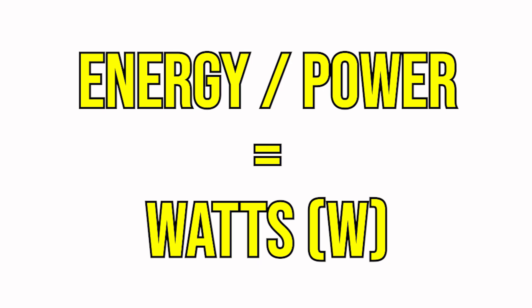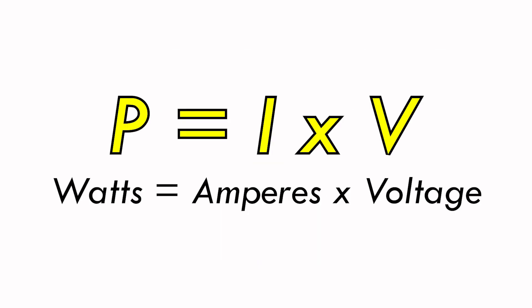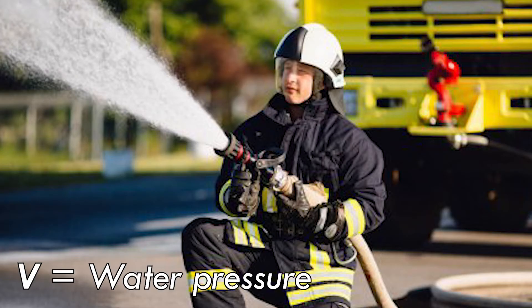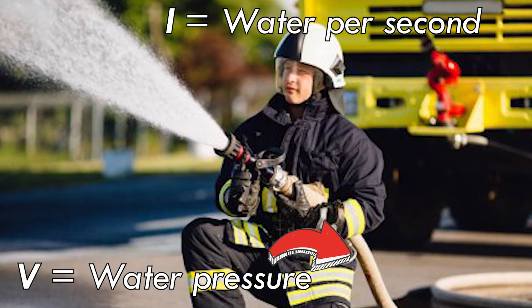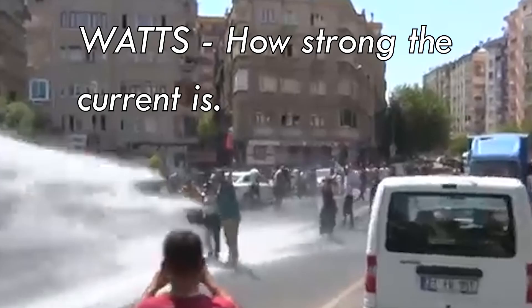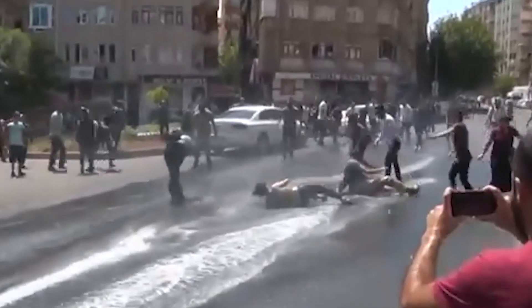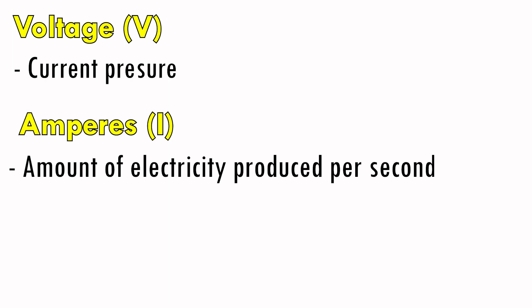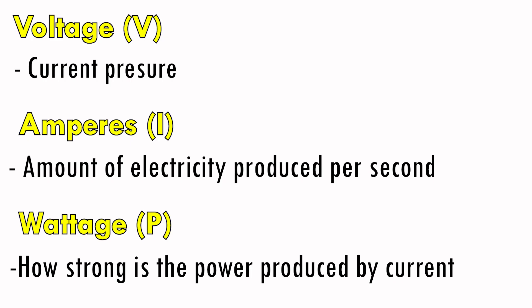That energy is measured in watts, with the formula P equals I times V. Using our water illustration: V being the voltage or water pressure, multiplied by I, being how much water is poured into you in one second — P will be the force you will receive if you get hit with water using a fireman's water hose. Very powerful, isn't it? So to summarize: voltage is the electric current pressure, amperes is the amount of electricity produced by the current per second, and wattage is how strong the power produced by our current is.